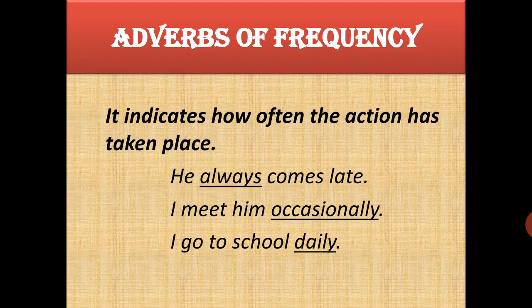Now, adverbs of frequency. It indicates how often the action has taken place — how many times the verb has been performed. For example, 'He always comes late.' How many times does he come late? Always. So 'always' tells you the frequency. 'I meet him occasionally.' But when? Occasionally — sometimes, on occasion. 'I go to school daily.' How many times? Daily. So 'daily', 'occasionally', and 'always' are telling you about the frequency — how often you are doing that particular action. Hence they are all adverbs of frequency.